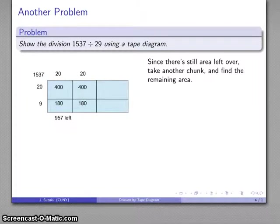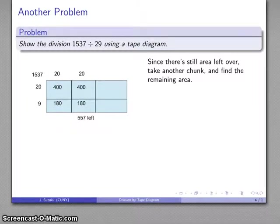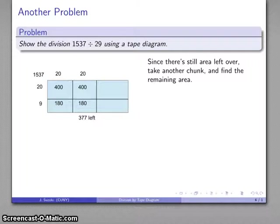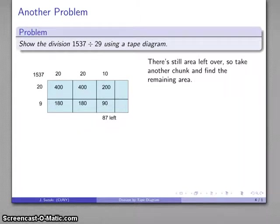And what do I have left over? Well, again, I'm going to subtract off the area here and that area. And after I do that, subtracting the 400, subtracting 180, now the remaining rectangles must have area 377. Well, I can't take off another piece of size 20, that's going to be too big, but I can certainly take off a piece of size 10 or so.